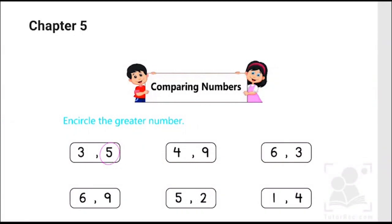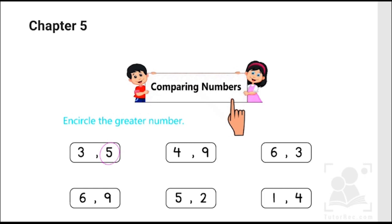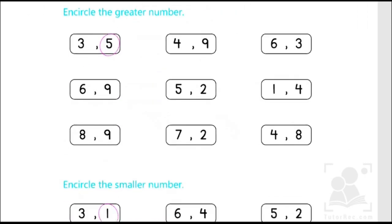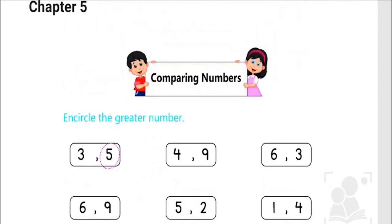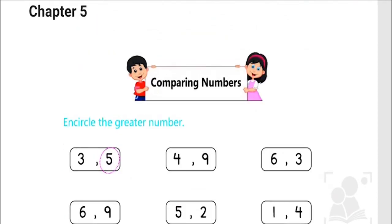Hi kids, in today's video we are going to learn chapter number 5 of mathematics related to comparing numbers. This chapter is about greater and smaller numbers. So let's start with today's activity.